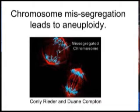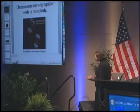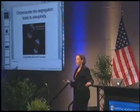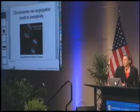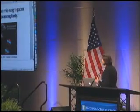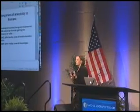A large part of my lab still studies this problem. But what I want to focus on today is a cell where these safeguard mechanisms have failed and chromosomes are being missegregated. You can see there is a chromosome being left behind in the middle that will end up missegregated. For several years now, we've been trying to understand the consequences for a cell when chromosomes are missegregated, because in all species where this has been studied, aneuploidy is highly detrimental.